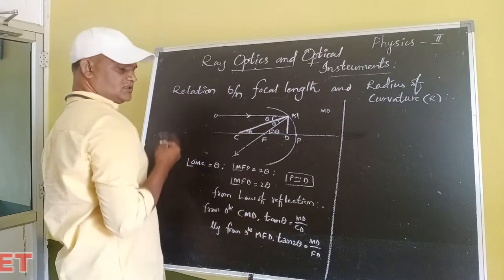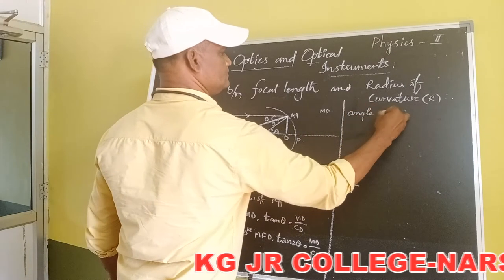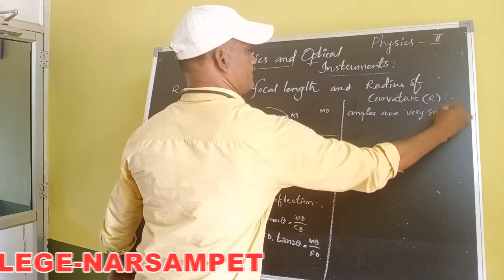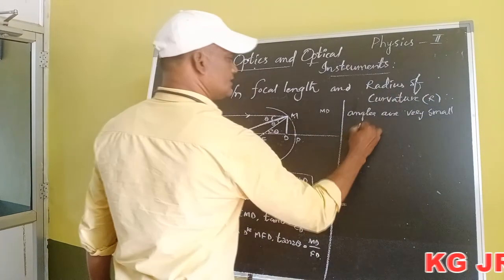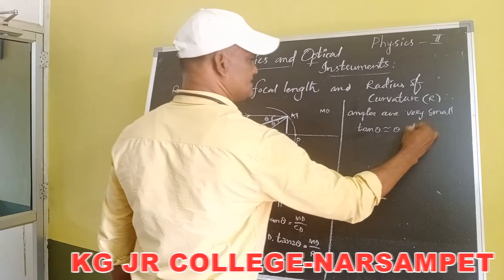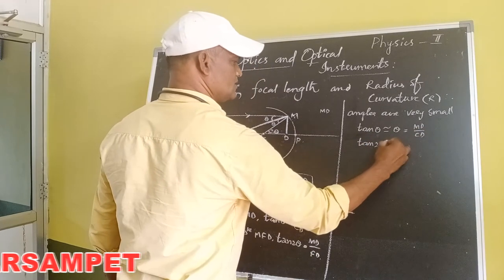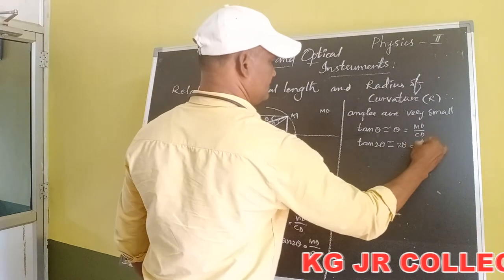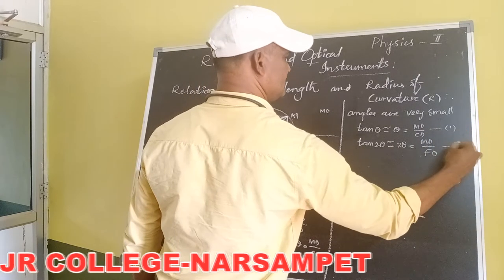Since the angles are very small, tan theta approximately equals theta, which equals MD by CD. Similarly, tan 2 theta approximately equals 2 theta, which equals MD by FD. Let us call these equation 1 and equation 2 respectively.